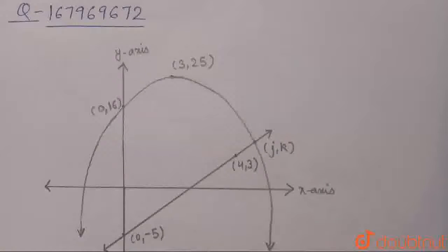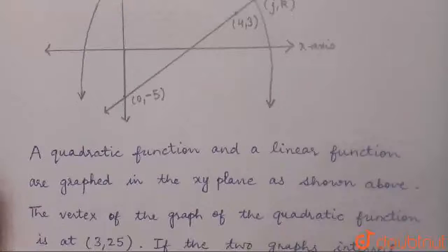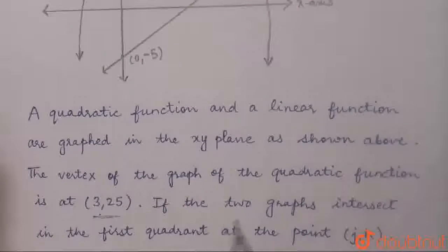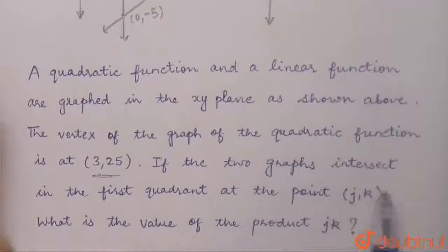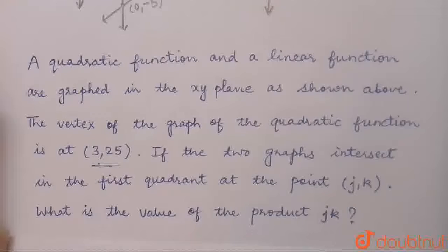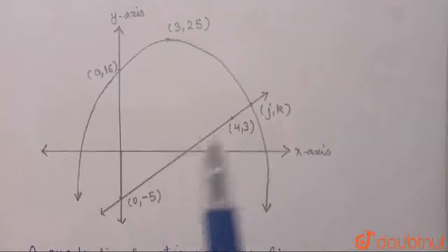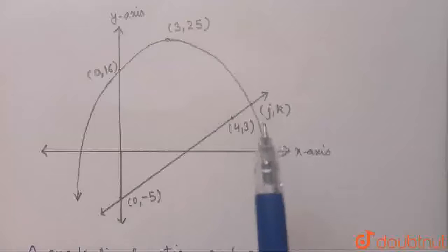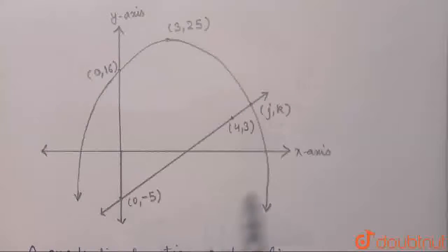Our question is: a graph is given to us and the question says that a quadratic function and a linear function are graphed in the xy plane as shown above. The vertex of the graph of the quadratic function is at (3, 25). If the two graphs intersect in the first quadrant at the point (j, k), what is the value of the product j·k?